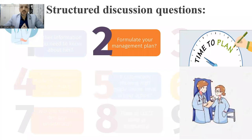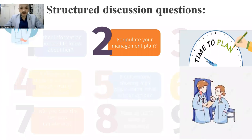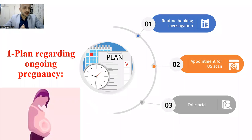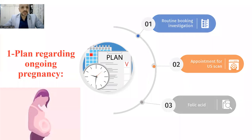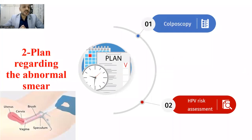The second question is how to formulate your management plan. This station involves a booking visit and a patient with an abnormal cervical smear result. The first part of the plan regards the ongoing pregnancy: this patient should have routine booking investigations, you should arrange an ultrasound scan appointment, prescribe folic acid as this is an unplanned pregnancy, and you should talk to her about having a proper method of contraception after delivery to avoid future unplanned pregnancies.